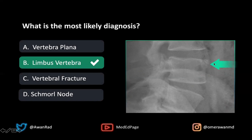This is not a fracture because this fragment is very well-corticated. It's certainly not an acute fracture. An acute fracture will result in ill-defined margins, whereas these are well-corticated margins. There may also be prevertebral or paravertebral soft tissue swelling with a fracture, which we don't see in this case.